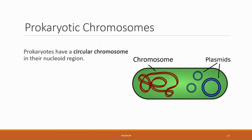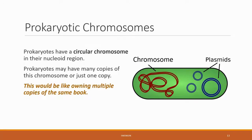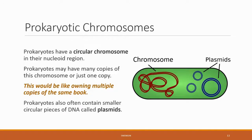Let's dig in a bit more on the structural differences between the two. Prokaryotes have a circular chromosome in their nucleoid region, meaning that there is no technical end or finish, but a closed loop. Prokaryotes may have many copies of this chromosome, or just a single copy, like owning many copies of the same book. Additionally, prokaryotes also often contain smaller circular pieces of DNA called plasmids that are like addendums to the chromosome.